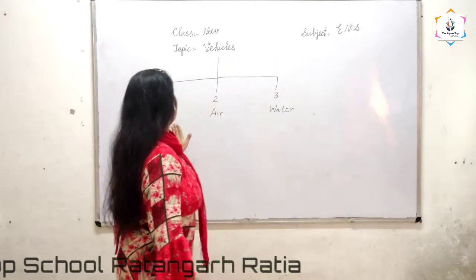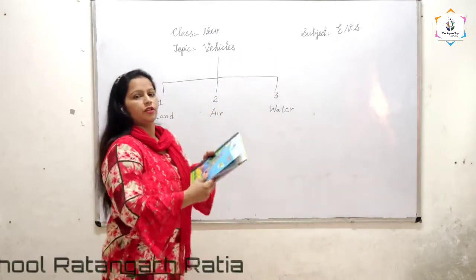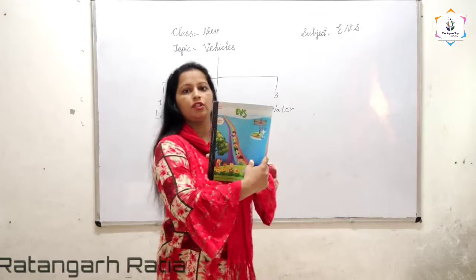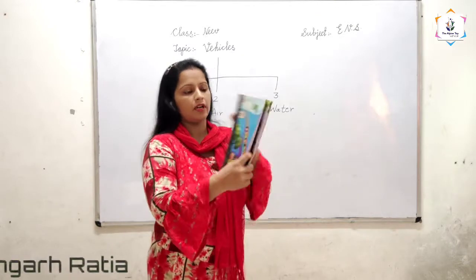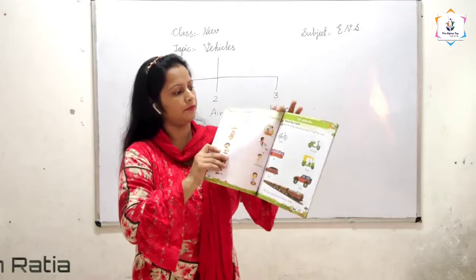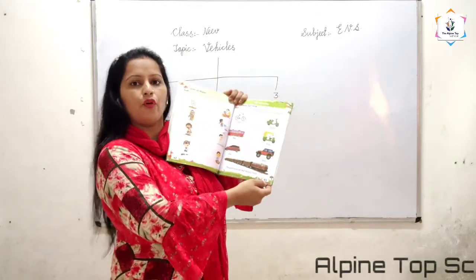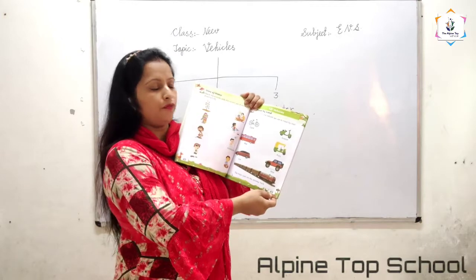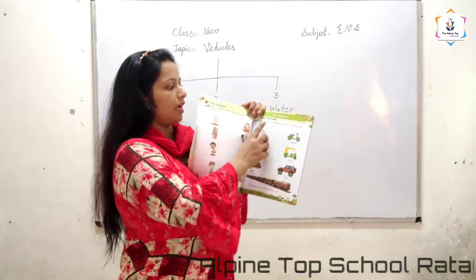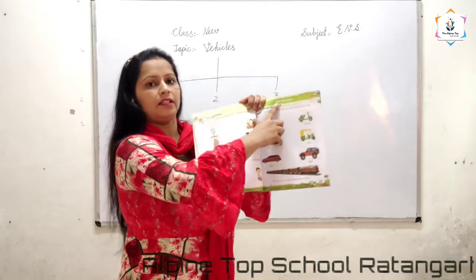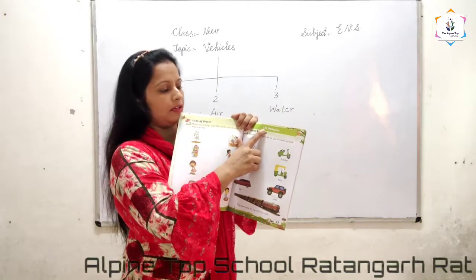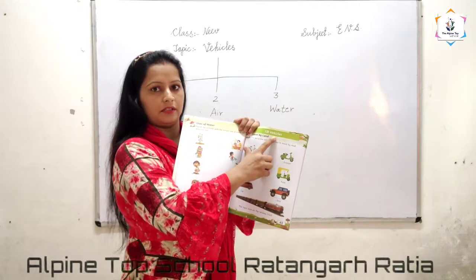First is land. Look, this is your EBS book, page number 43, and lesson number 12: Vehicles.